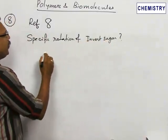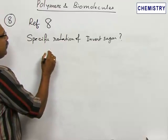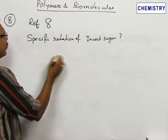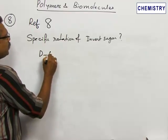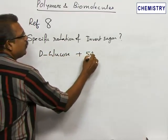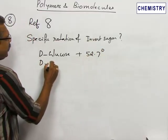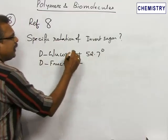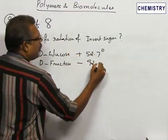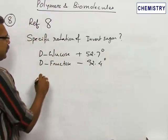The invert sugar is equimolar quantities of D-glucose and D-fructose. D-glucose has the specific rotation plus 52.7 degrees. Similarly, D-fructose has minus 92.4 degrees, and since the mole fractions are equal,